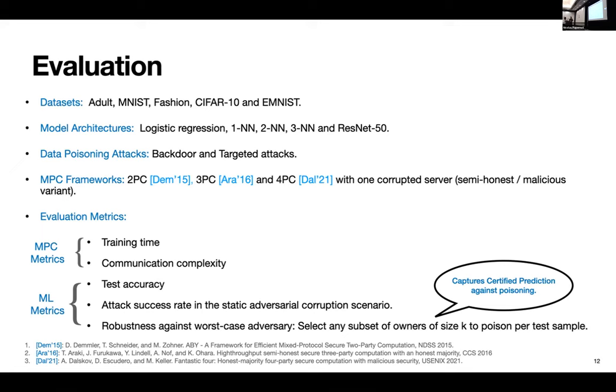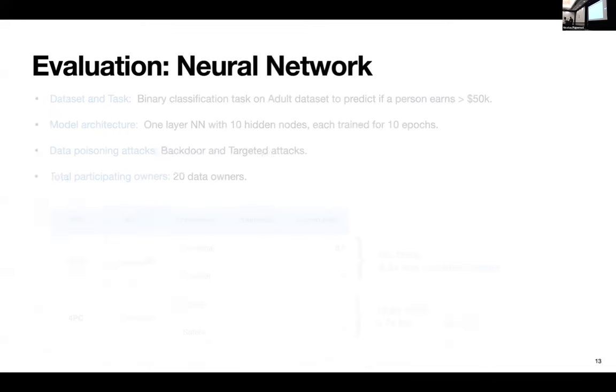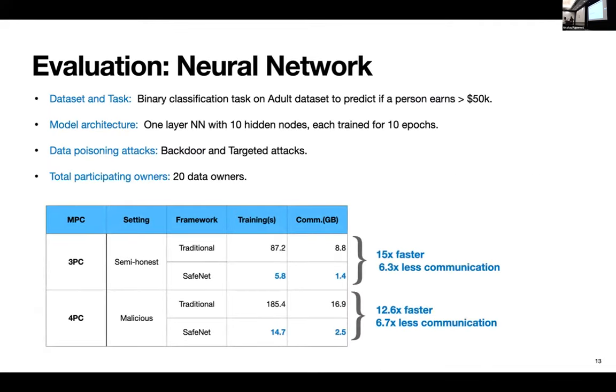The first two metrics come from the MPC side of things where you have a training time that is how much time do you need to train this model inside the MPC. Communication complexity is how many messages or the amount of information that needs to be exchanged between the servers during the training procedure. The last three are from the ML side where you have the test accuracy, that is what is the accuracy of the final trained model. Second is what is the success of the attacker in the presence of static corruption. So static corruption is where the adversary chooses which owners to poison and which servers to poison in the beginning of the training phase and then that's fixed. And then we also finally test for robustness against worst case adversary where for each test point that it wants to misclassify the adversary can dynamically choose which owners to poison and which servers to corrupt. So this more or less captures the certified prediction against poisoning.